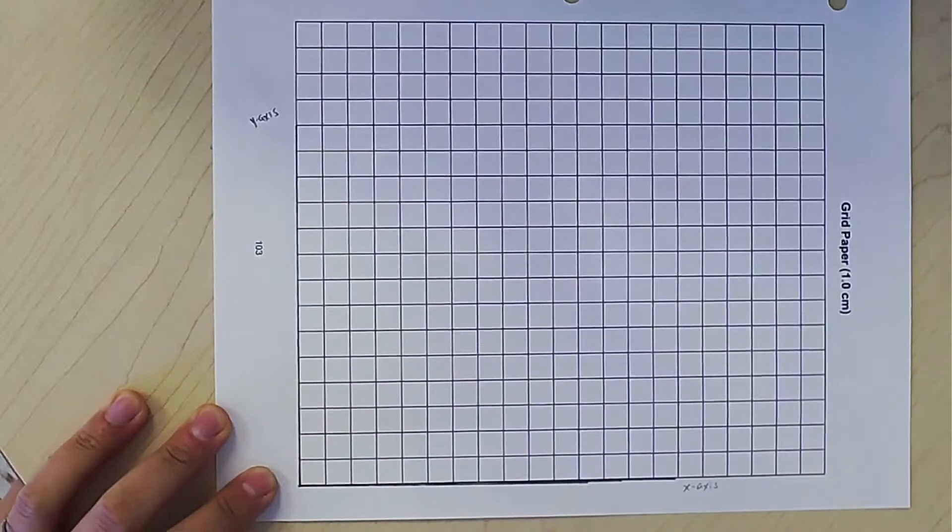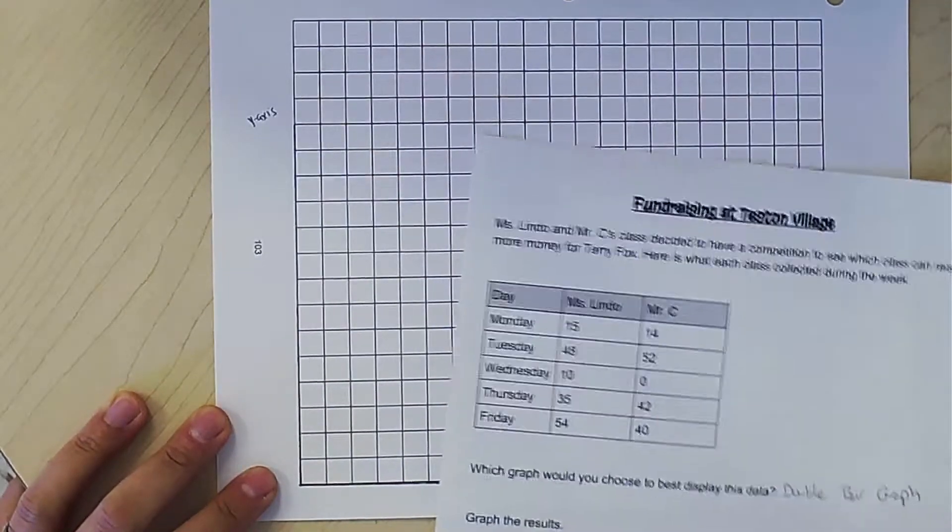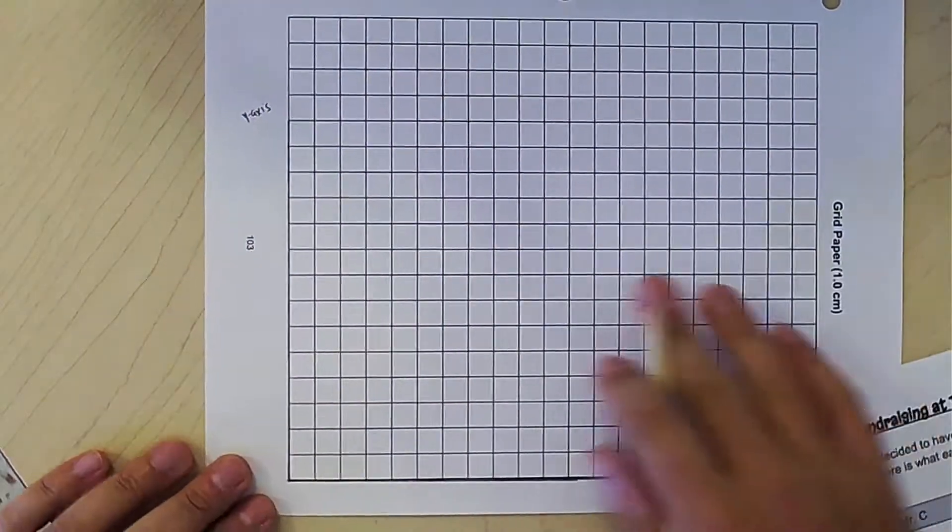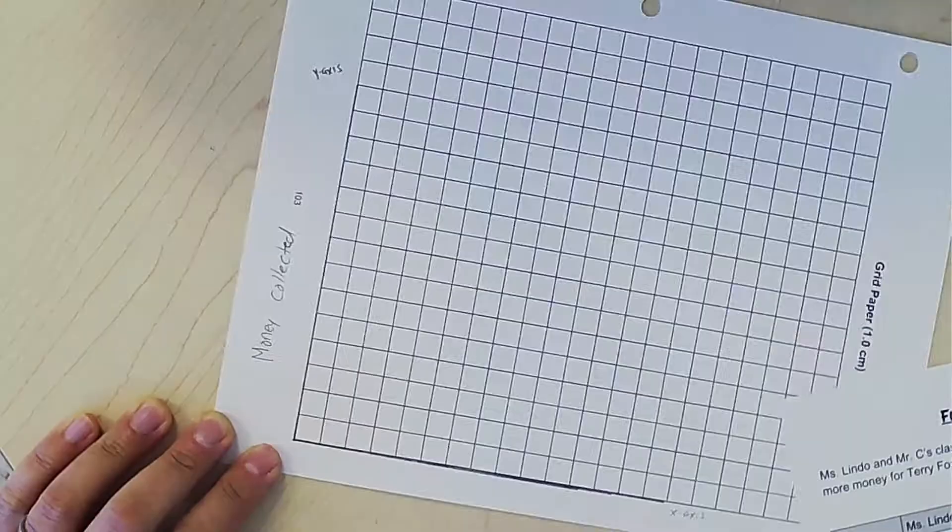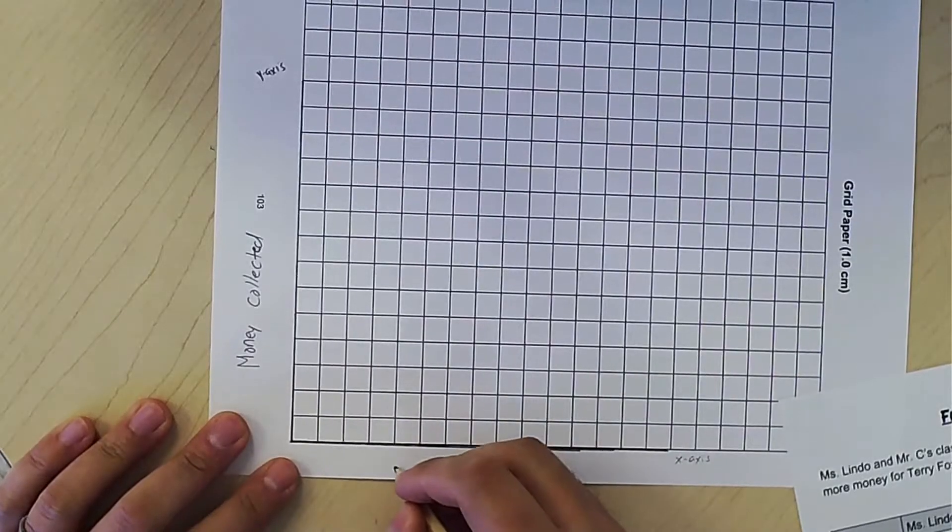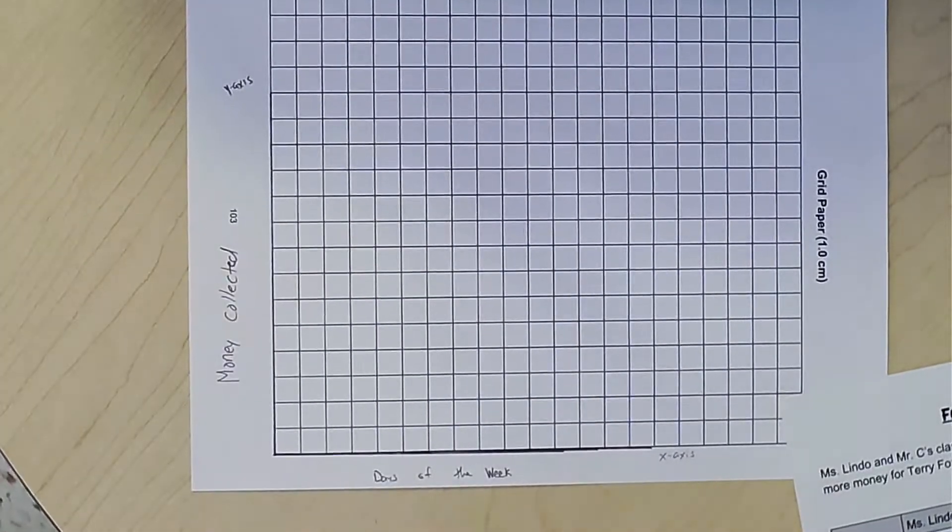So what should the label be for this? I'm going to put here money collected, and then what goes at the bottom? Days of the week. Okay, so we've labeled it. What's next?